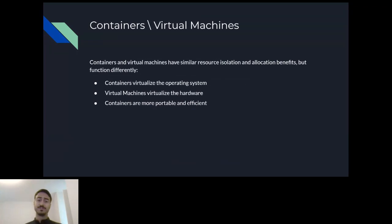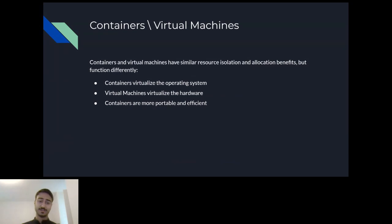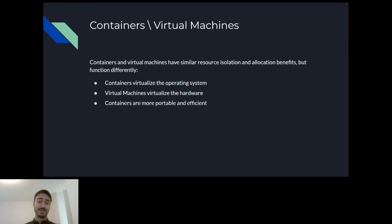The main difference between containers and virtual machines is that containers rely on the operating system to make its isolation, while virtual machines rely on hardware. Virtual machines virtualize everything, including the kernel, while containers run on the same kernel as the host. Because of that, containers are much more portable and efficient — a container image can be as small as a few kilobytes, while a virtual machine image will usually be at least a few gigabytes. All of that comes with a price, of course.